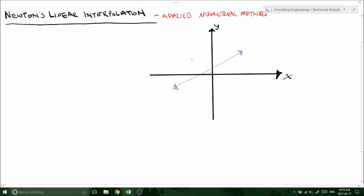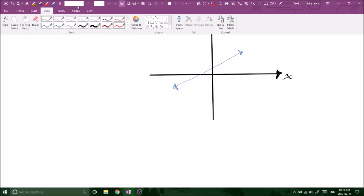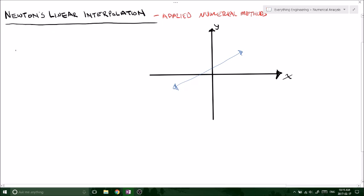Newton's linear interpolation - we're going to be developing the equation of a line, given two points. Remember that the equation of a line is always y equals mx plus b. This can also be written as a naught plus a1 times x. This is just the general form of a polynomial.